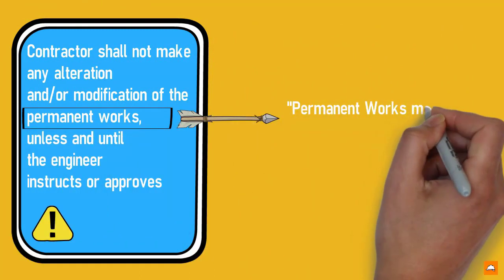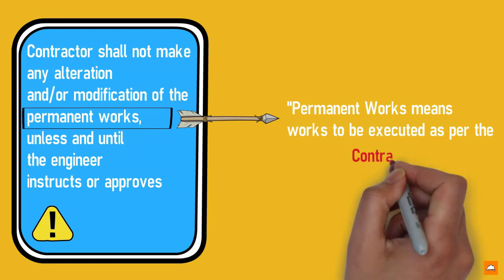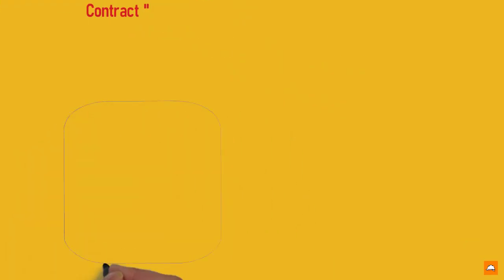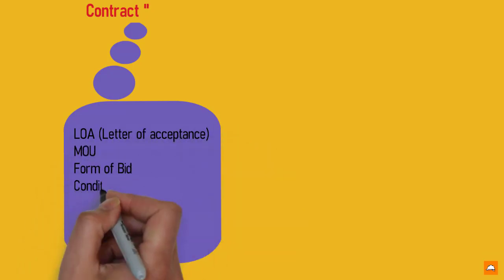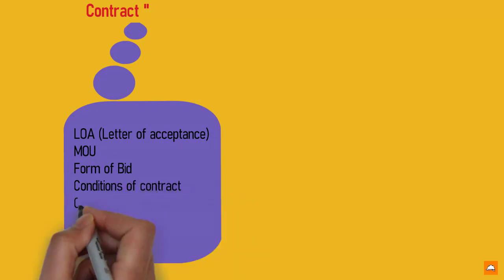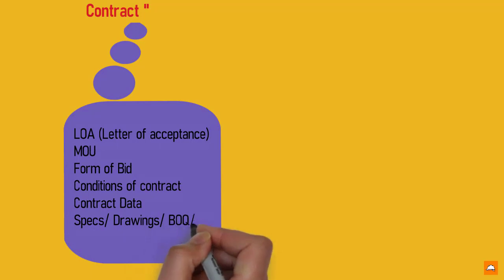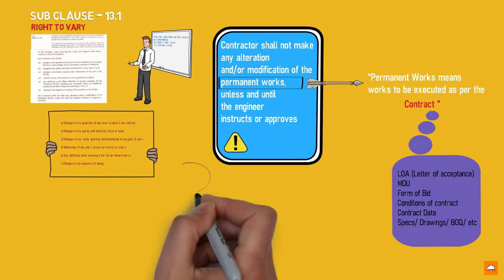Permanent works means works to be executed as per the contract. So what does the contract mean? Letter of acceptance or commonly known as LOA, memorandum of understanding or termed as MOU, form of bid, conditions of contract, contract data, specifications, drawings, BOQ or any other annexes listed in the contract agreement are included into the contract.